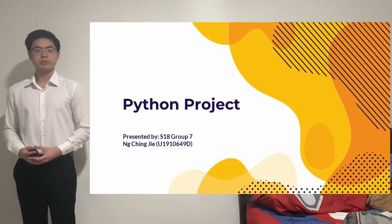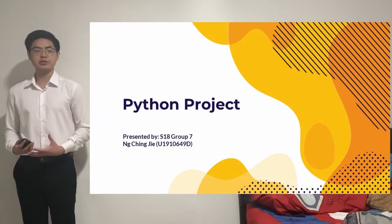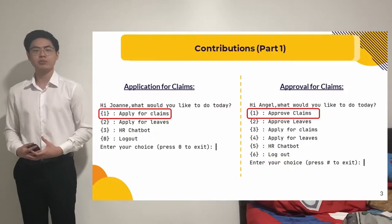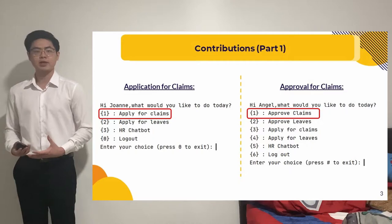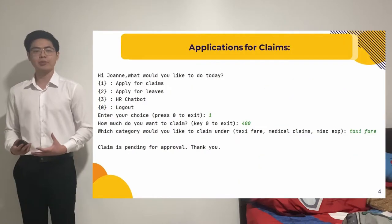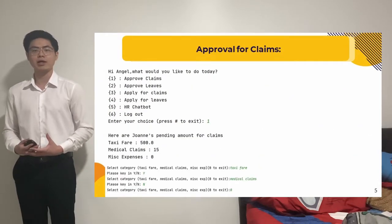Hi, good afternoon. My name is Jingjie. Let's start with my contributions to the team. I have helped to create two key functions, namely the applications for claims and approvals for claims. This means that employees are able to apply for claims and managers are allowed to approve claims.